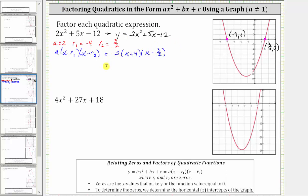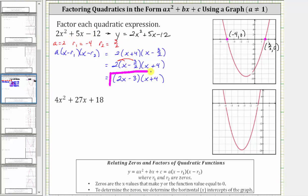Let's first change the order and write this as two times the quantity x minus three halves times the quantity x plus four. Now we'll distribute the two to clear the fraction from this binomial. Two times x is two x, and then minus two times three halves — the two simplifies out — giving us two x minus three, and then we still have times the quantity x plus four. This is the factored form of two x squared plus five x minus 12, which if we wanted to, we could multiply out to verify.